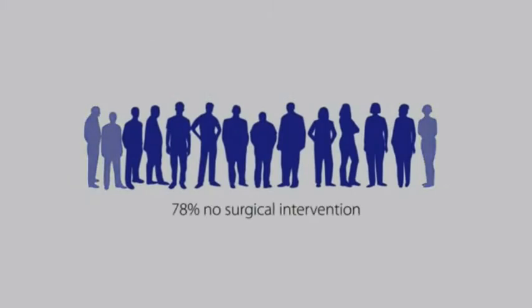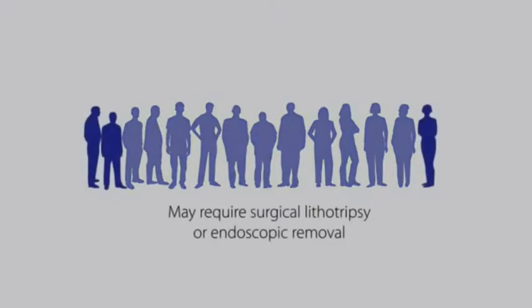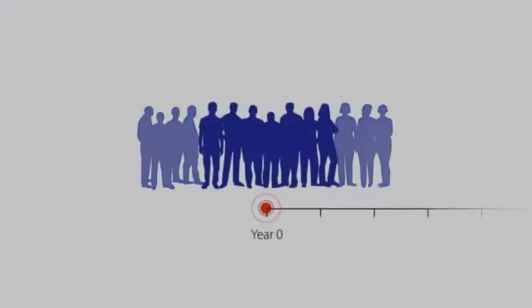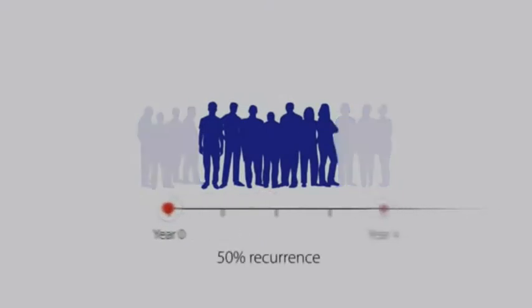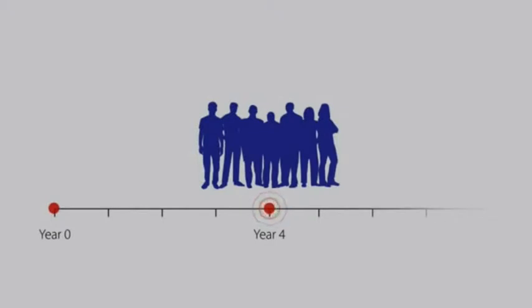Fortunately, in about 78% of these patients, stones will be expelled spontaneously. But stones that become lodged in the ureter may require lithotripsy, or percutaneous or endoscopic removal. It's important to note that nearly half of all first-time stone formers will have another stone episode within the next four years. Recurrent stone formers are at even greater risk and may form a new stone every two or three years. But what actually causes crystals to form?